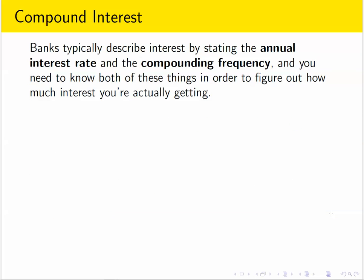So how do we describe the interest that's accruing? Typically a bank will advertise an annual rate of interest, and then you might have to read the fine print to find the compounding frequency. That's how often interest is compounded each year. Once you know both of those things you're going to be able to figure out how much interest you're actually getting.